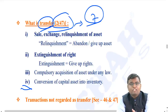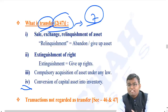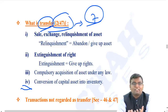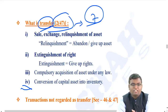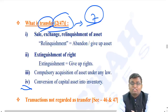Number two: extinguishment of right. For example, you have a right to purchase shares (a rights share entitlement) and you renounce it in someone else's name for some consideration. Here you are not transferring the asset but the right to purchase it - this is extinguishment of right, also regarded as transfer. Number three: compulsory acquisition of asset under any law by government order also amounts to transfer.